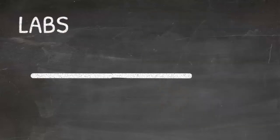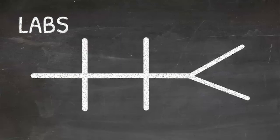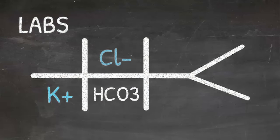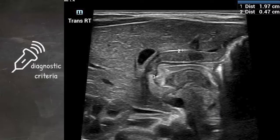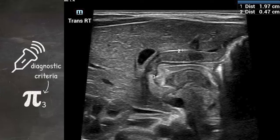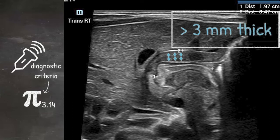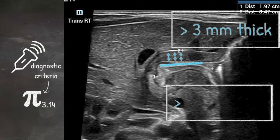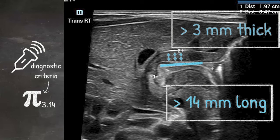Laboratory data can be obtained to check for electrolyte imbalances, with particular attention to bicarb, chloride, and potassium. Next, an ultrasound, which is the gold standard, can be obtained. Easy way to remember this is to remember the value of pi as 314, 3 millimeters thick and 14 millimeters long, and anything above this is diagnostic.